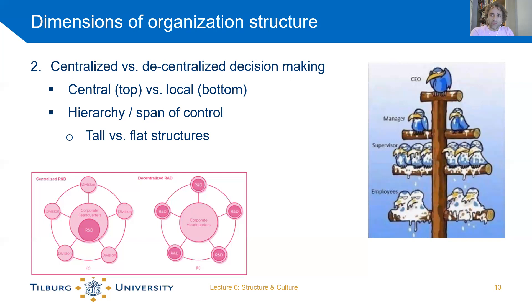What works best depends on the organization. If you make a fixed product and need everyone to do their specific job with little freedom, or if you work with classified information or strict security requirements, centralized decision-making probably works best. If you're a flexible, innovative organization with professional, autonomous employees, a flat structure with bottom-up decision-making works best.